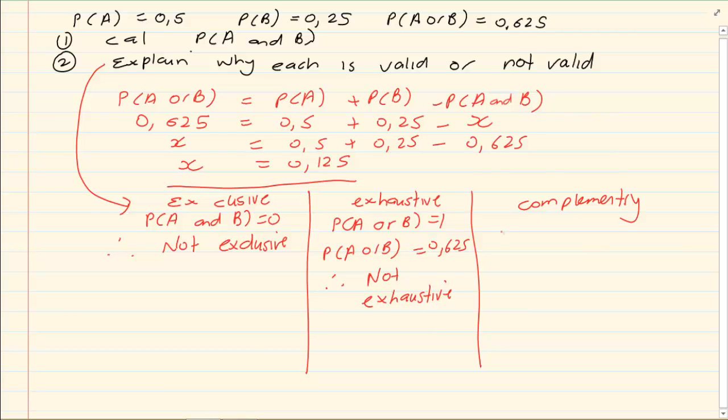Is it complementary? Complementary states that P of A plus P of B must equal to 1. In this case, if I got 0.5 plus 0.25, it is equal to 0.75. Therefore it is not complementary.